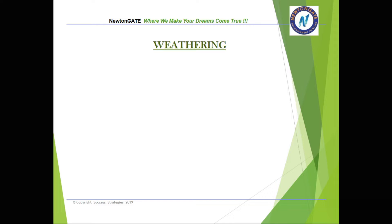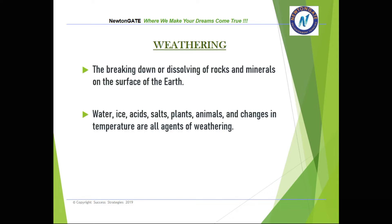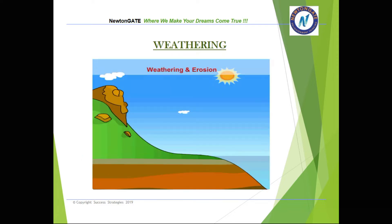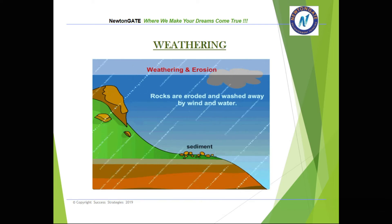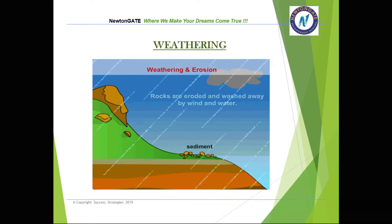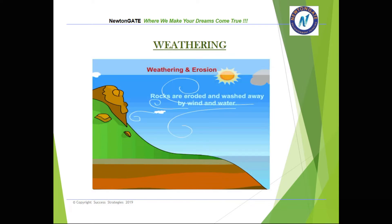First, let us see what is the meaning of weathering. Weathering means the breaking down or dissolving of rocks and minerals on the surface of the earth. Water, ice, acid, salt, plants, animals, and changes in temperature are all agents of weathering. Weathering does not involve transport of rock material. Here is a pictorial representation of weathering — rocks are eroded and washed away, and the broken down rock particles are called sediments.